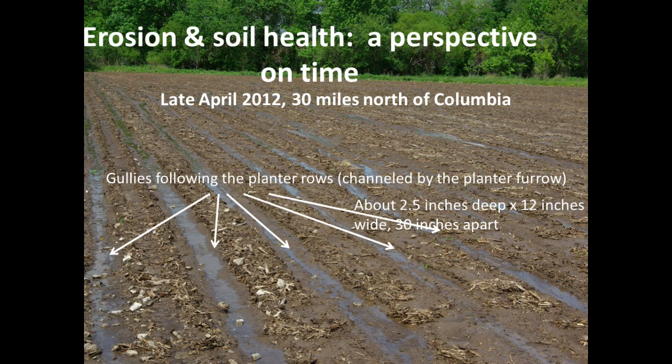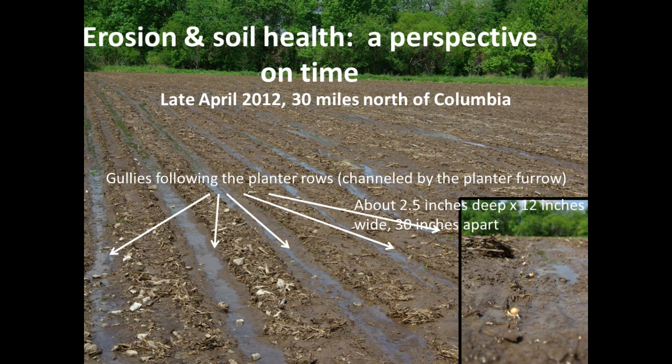We happen to have a really convenient depth gauge on this. In the close-up picture you can see some little yellow dots — those are corn seeds. They're planted about two inches deep and there's about a half-inch root pegging them into the ground below, which is why they didn't wash away. So that gives us a pretty good idea of how deep those gullies were — about two and a half inches deep. Taking that two and a half inches, with 12 out of every 30 inches having gullies that deep, that comes out to an average of one inch.